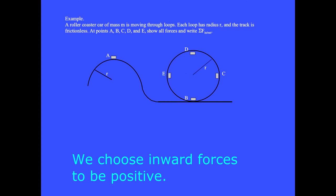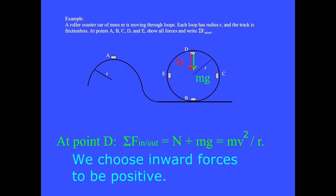At point D, the weight is downward and inward and positive, and the normal force is also downward and inward and positive. So the sum of the inward and outward forces is plus N plus Mg equals Mv² over R.